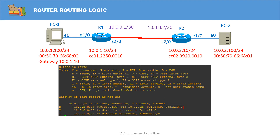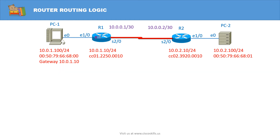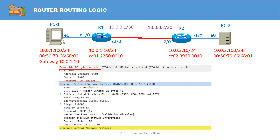It follows the instruction in this routing entry to forward the packet to the destination IP 10.0.0.2 out via the serial interface. Now Router 1 knows it has to forward the packet out via the serial interface, so it encapsulates the packet into an HDLC frame, then forwards the HDLC frame out via the interface S20.